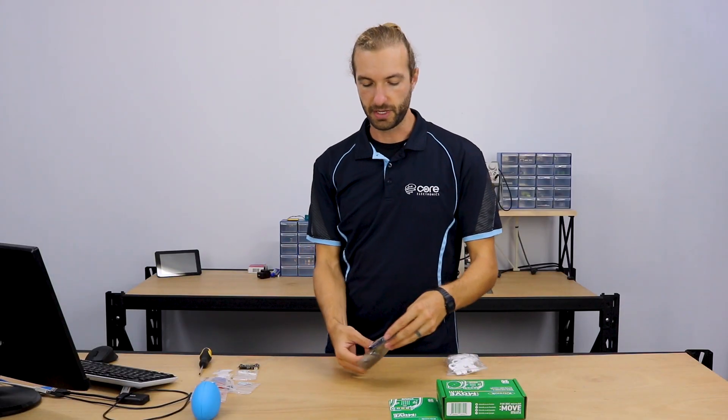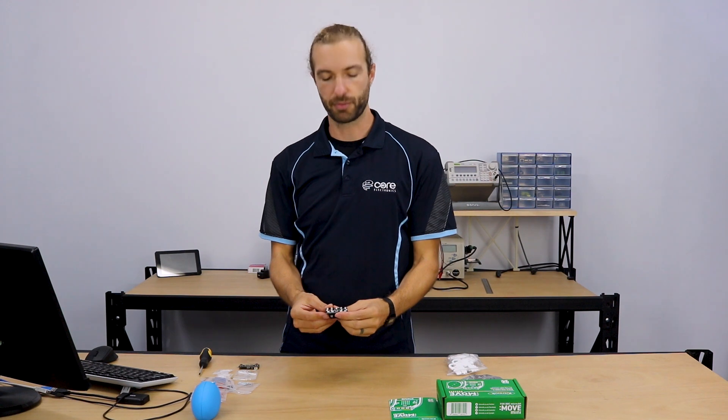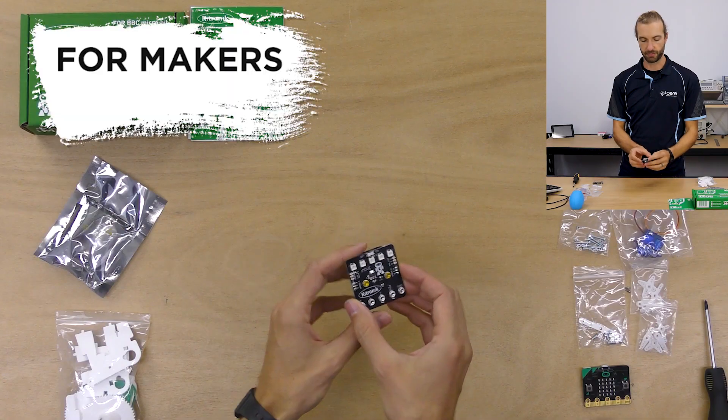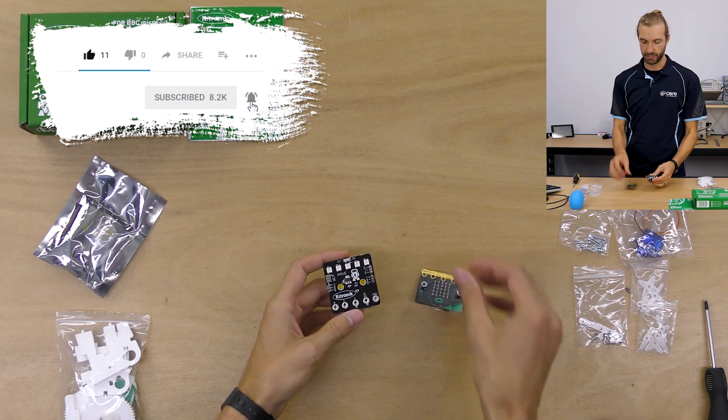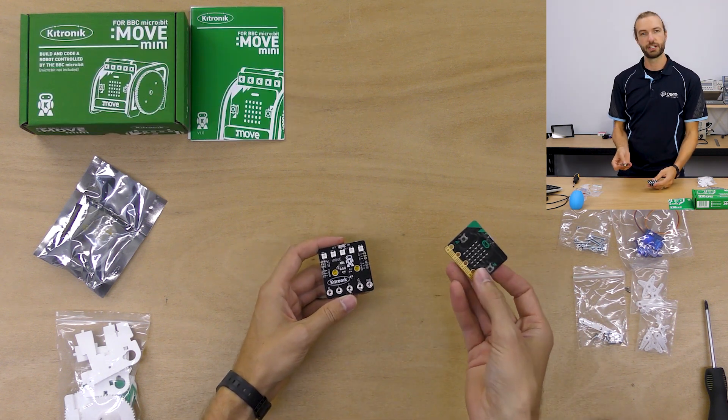The first step to assemble the Move Mini is to take the servo light board, which is the brains of the Move Mini. Well, not the brains, but it's what allows the servos to work. And for the kit, we're going to need a micro bit. Micro bit doesn't come with the kit.